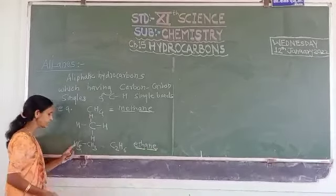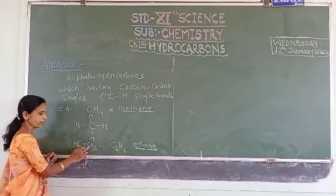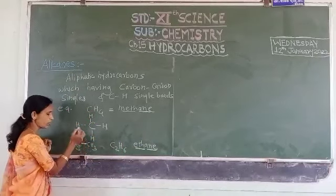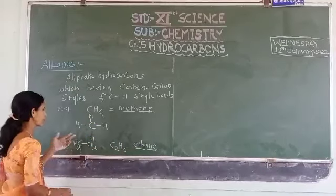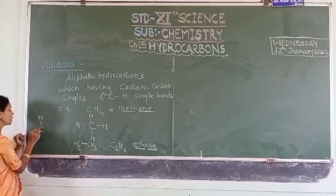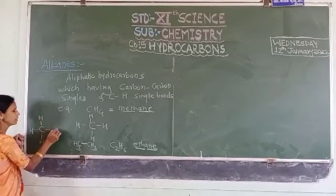Eth root name is there and -ane suffix is there. Eth means two carbon atoms. The structural formula of ethane has a carbon-carbon single bond, and all carbon-hydrogen bonds are singly bonded. Therefore it is an alkane. All of you studied about a few more examples of alkanes in 10th standard as well as in the previous lecture.